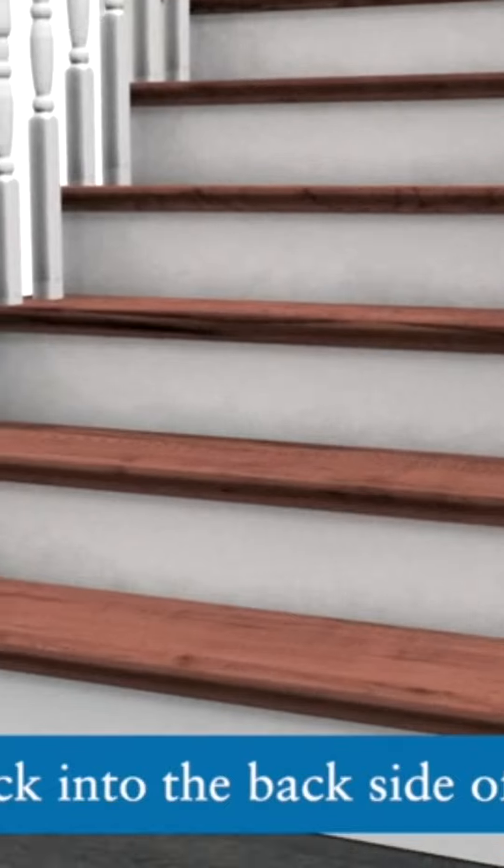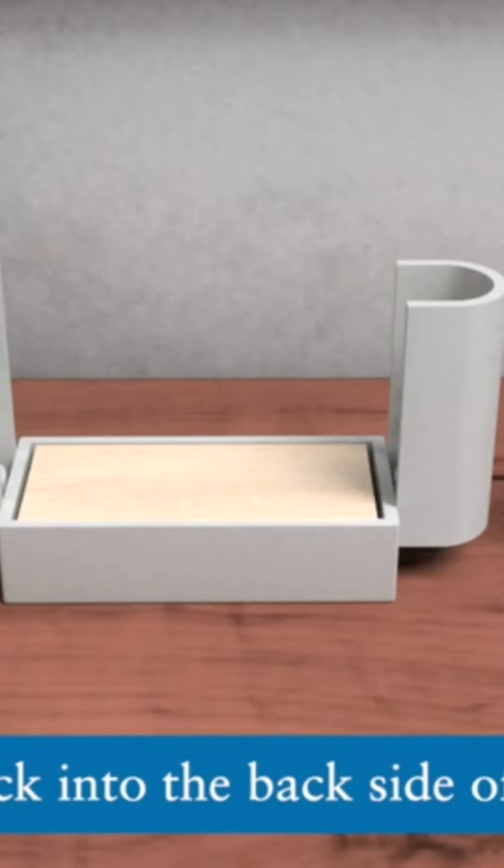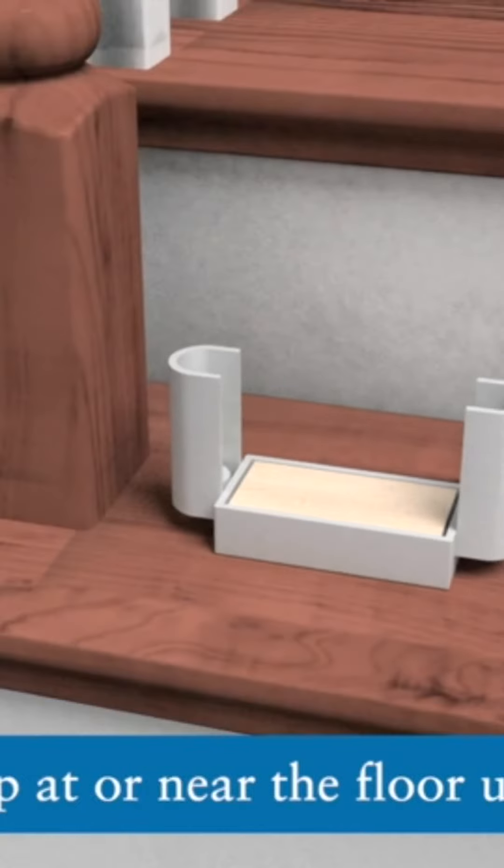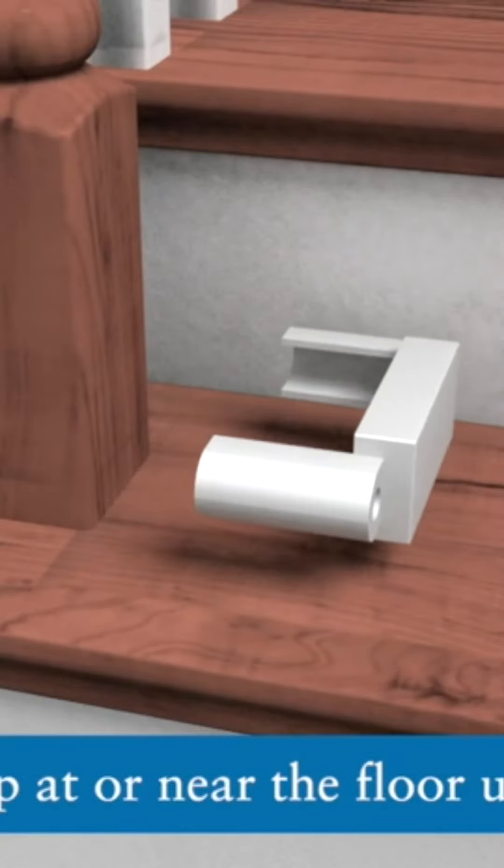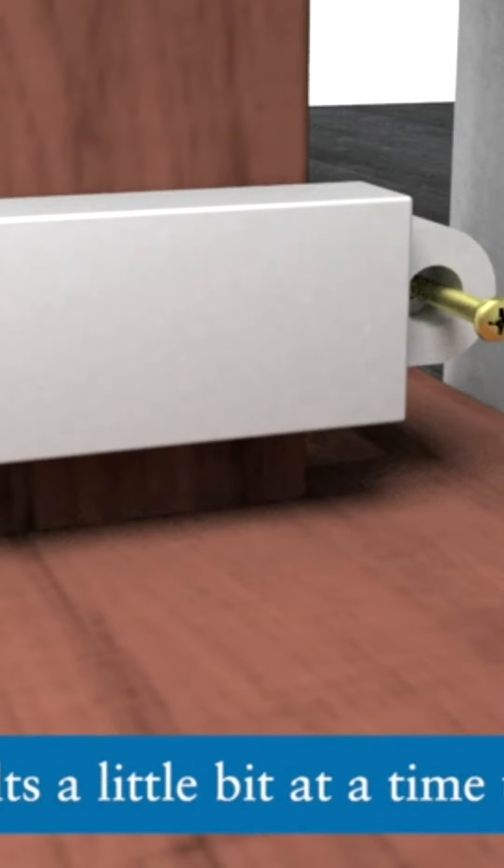Begin by inserting a wood block into the back side of each clamp front. Attach the lower clamp at or close to the floor using two of the provided bolts. Tighten each bolt a little bit at a time so both sides are tightened evenly and the clamp is secure.